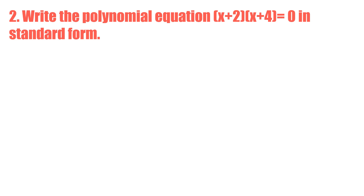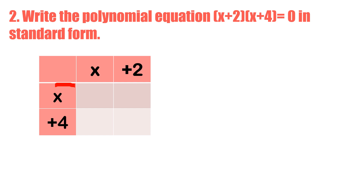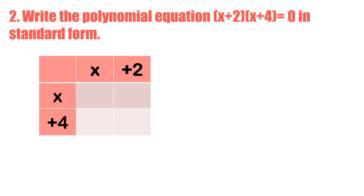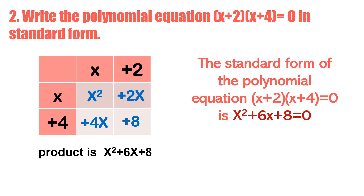Example number 2: write the polynomial equation (x+2)(x+4) = 0 in standard form. Using the table — similar to the FOIL method since there are only two factors — x times x is x squared, x times 2 is 2x, 4 times x is 4x, and 4 times 2 is positive 8. This gives us x squared plus 6x plus 8. So the standard form is x squared plus 6x plus 8 equals 0.